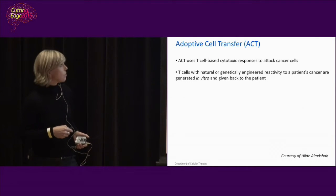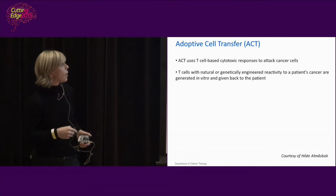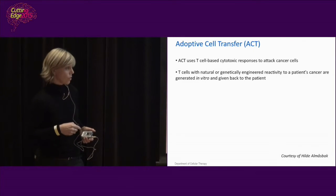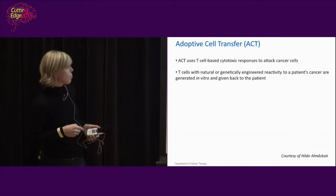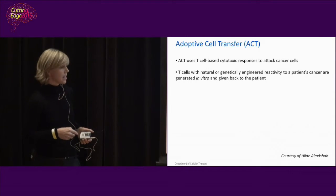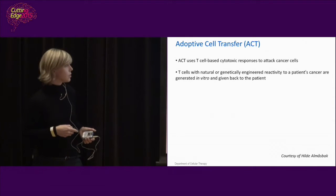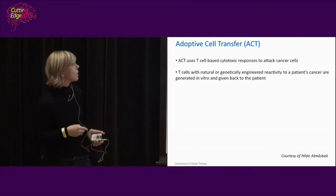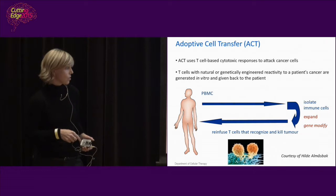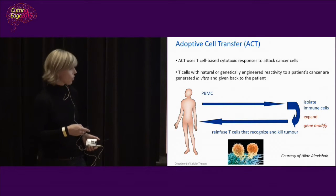Then there is adoptive cell transfer. You take cells out of the patient, modify them, put them back, and they are ready to attack and kill tumor cells. You can isolate cells already present in the patient and expand them in the lab before returning them. In some cases that's not possible, but you can genetically engineer these cells to express the molecule that makes them target tumor cells. You take blood cells, isolate the immune cells, expand them in the lab, insert the gene that makes them recognize the tumor, and give them back.